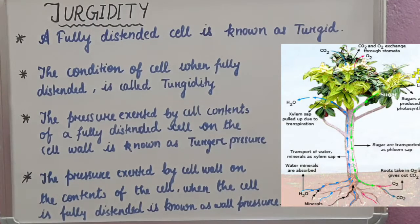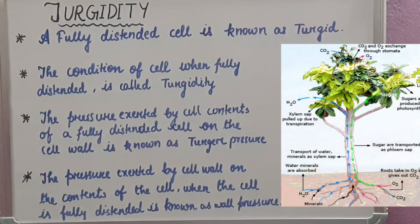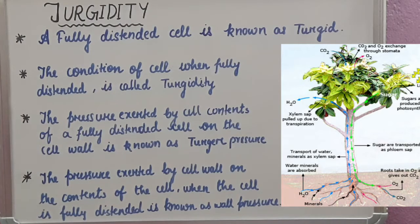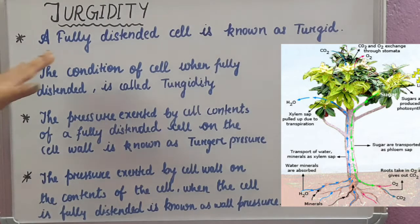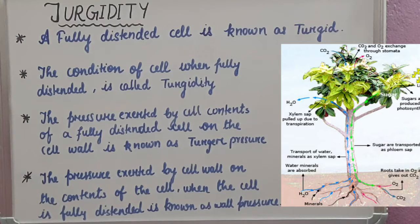Hello everyone, this is Priyanka here. Welcome to Simply Biology. Today we are going to start another topic from plant physiology — that is turgidity. Let's see what turgidity is. A fully distended cell is known as turgid.